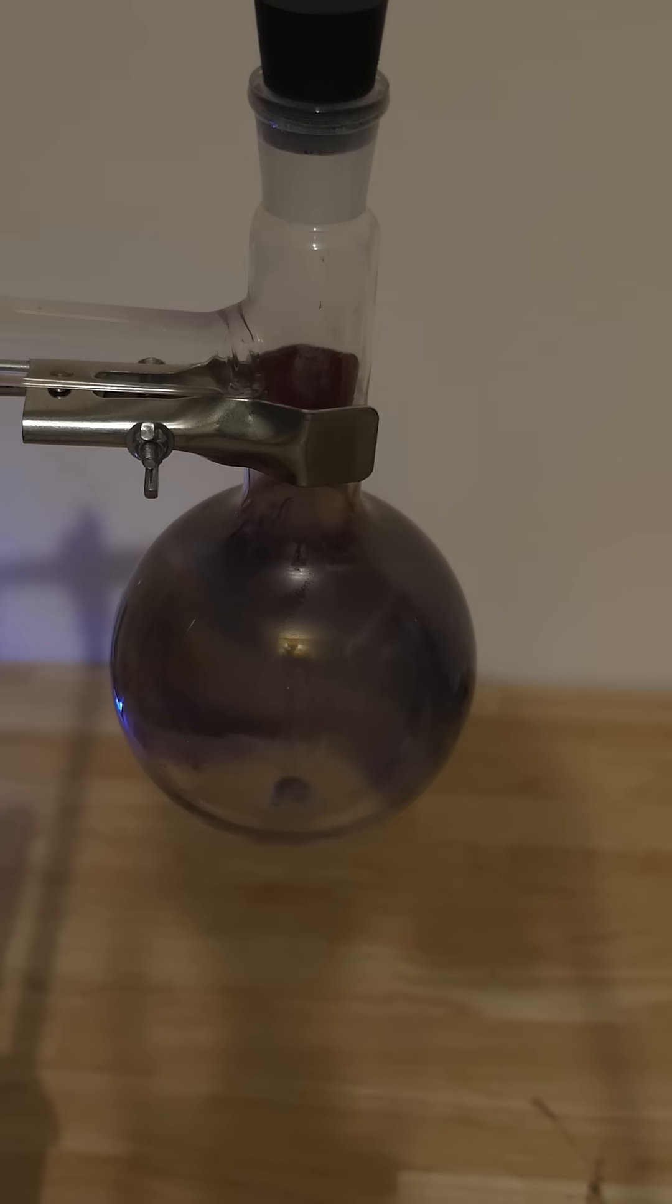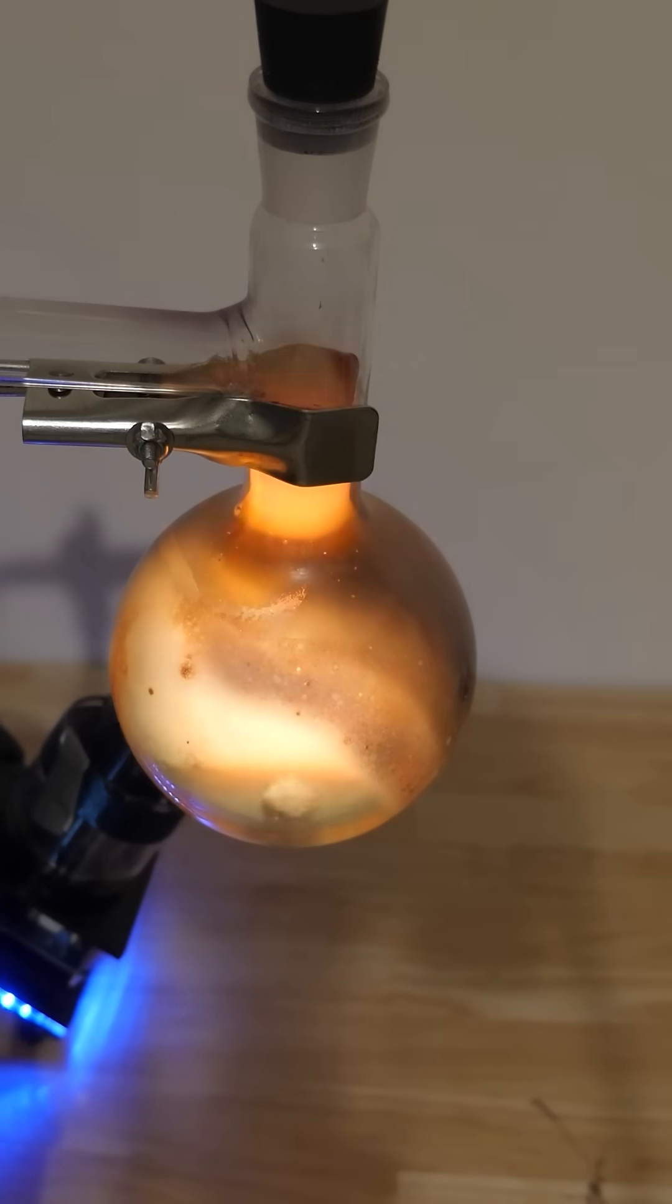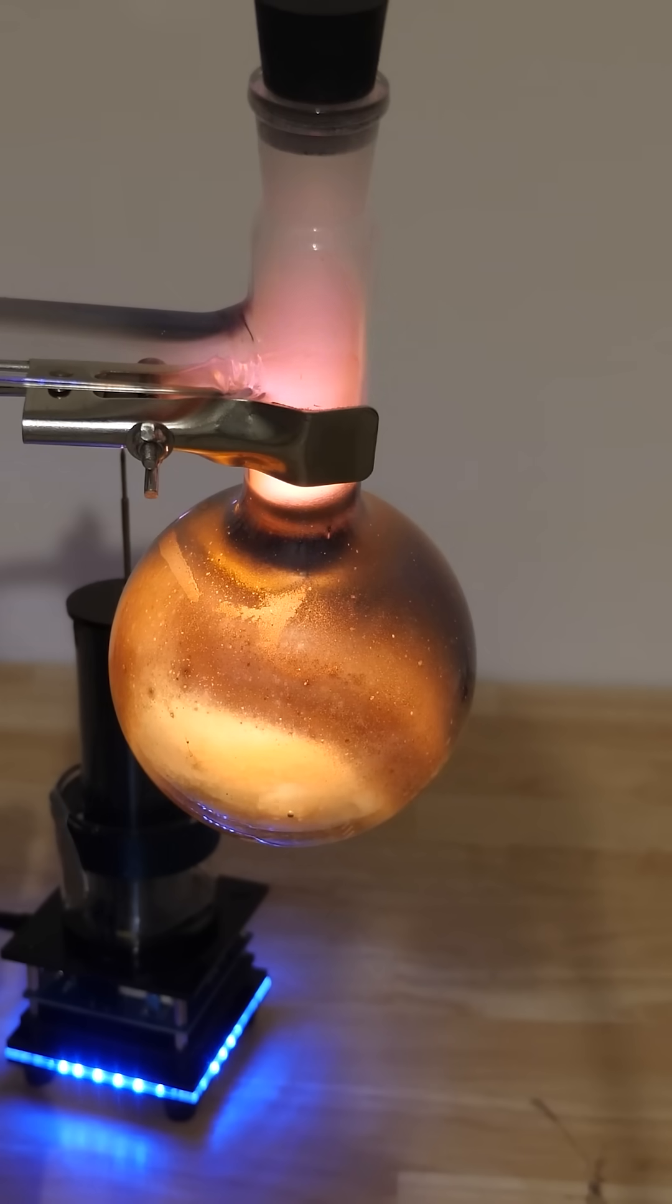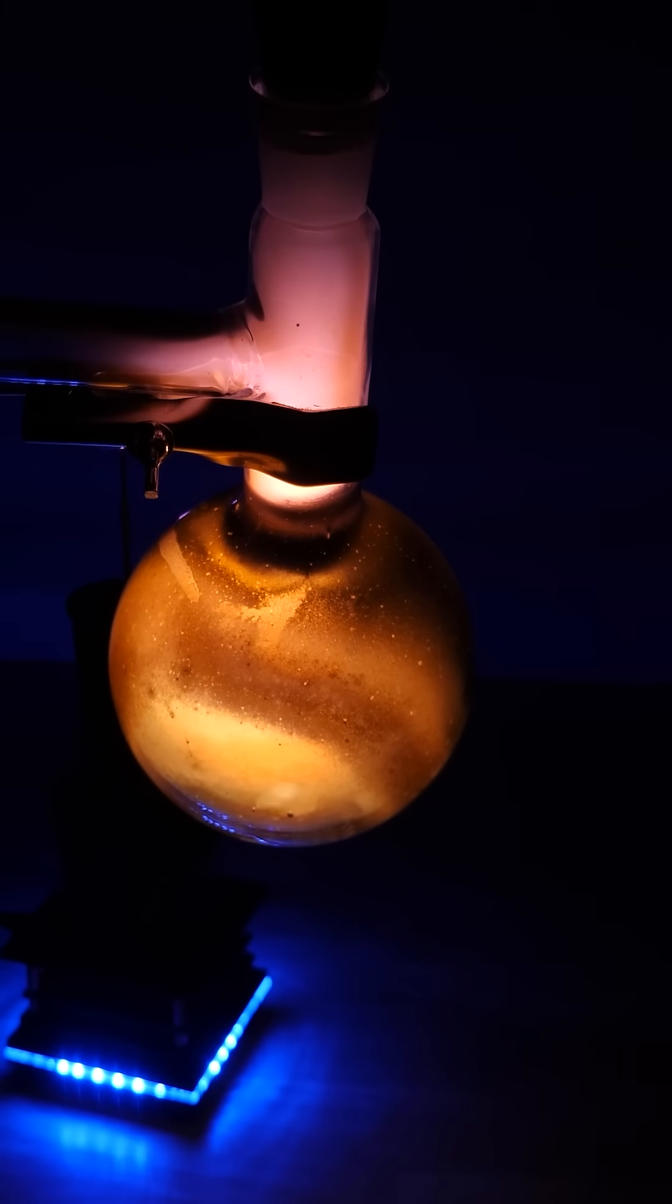And as I bring the Tesla coil near, it creates such high voltages that it can actually tear electrons off of the sodium vapor and create a sodium plasma. It looks like there's a fire burning inside of the flask.